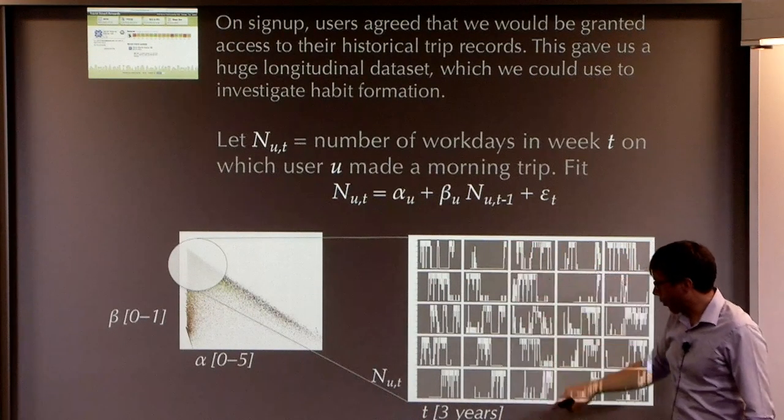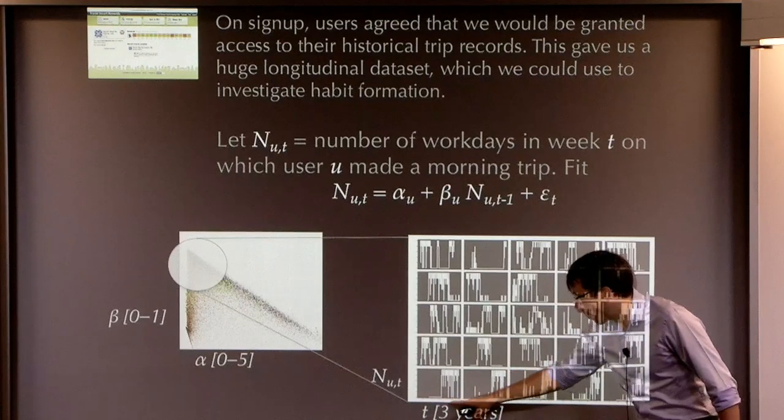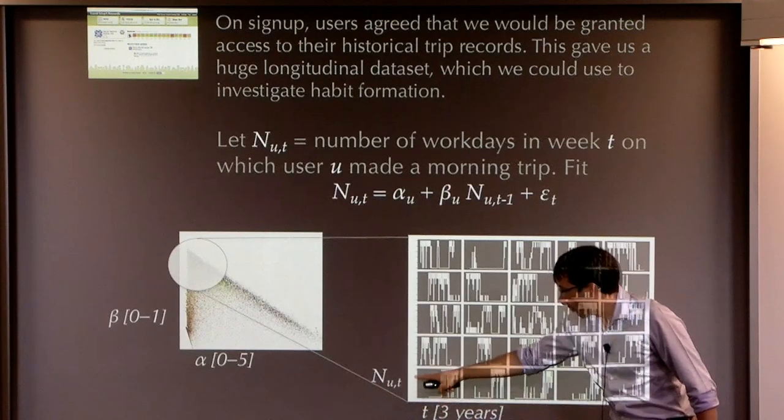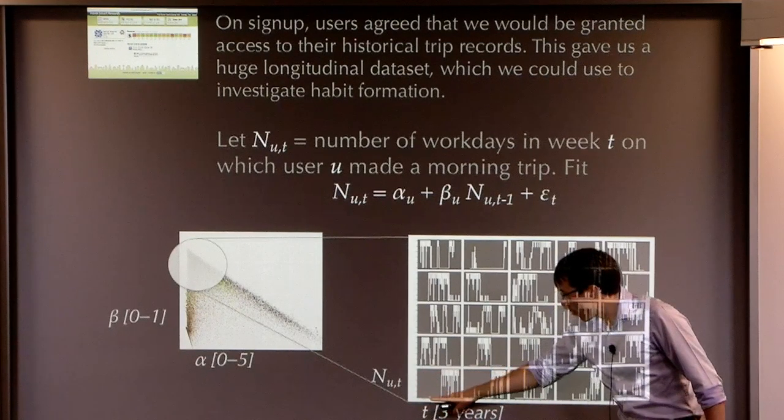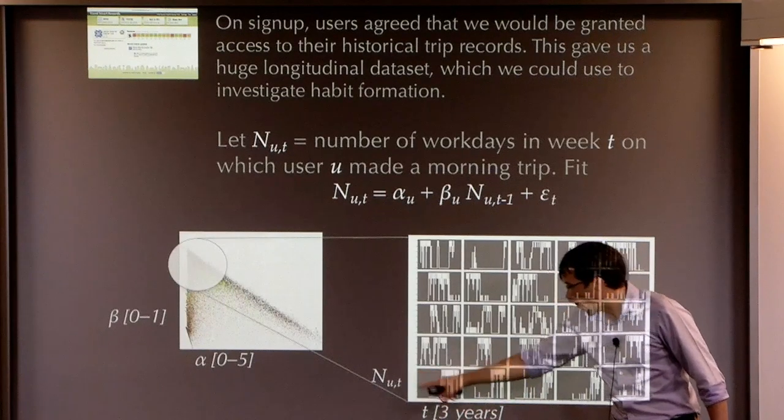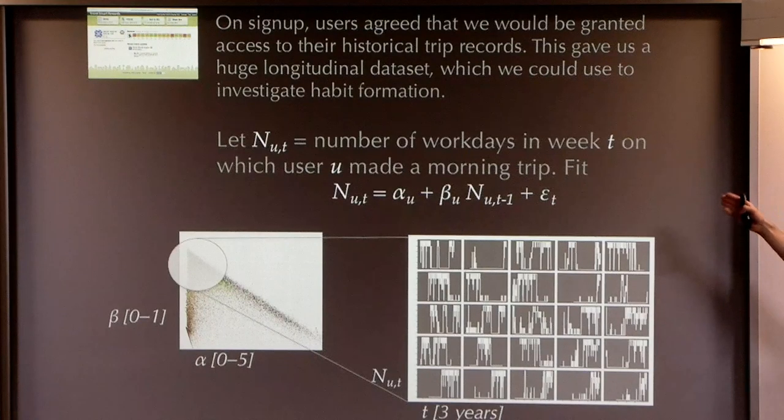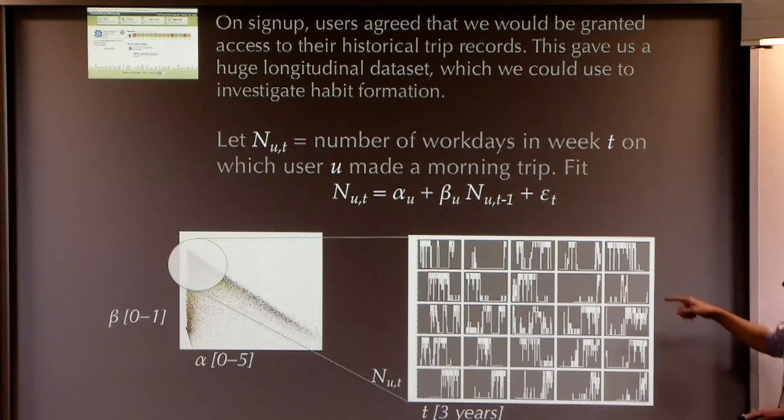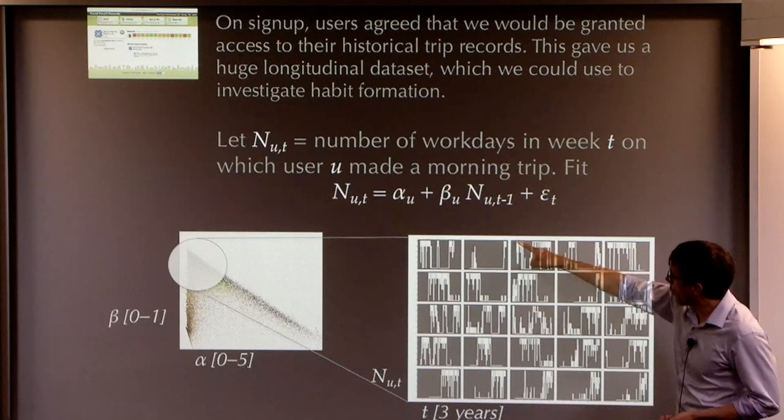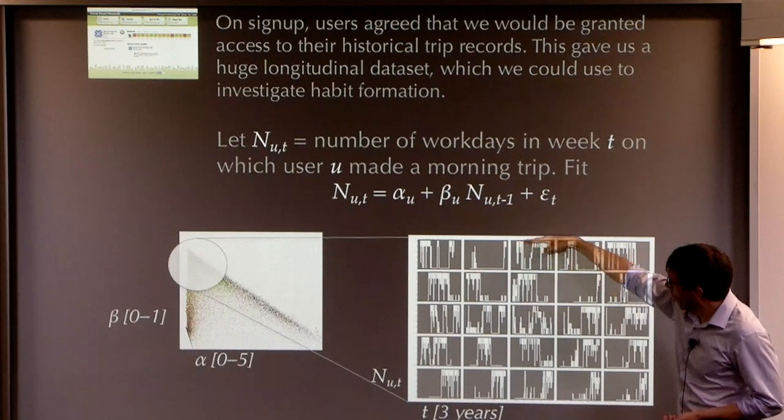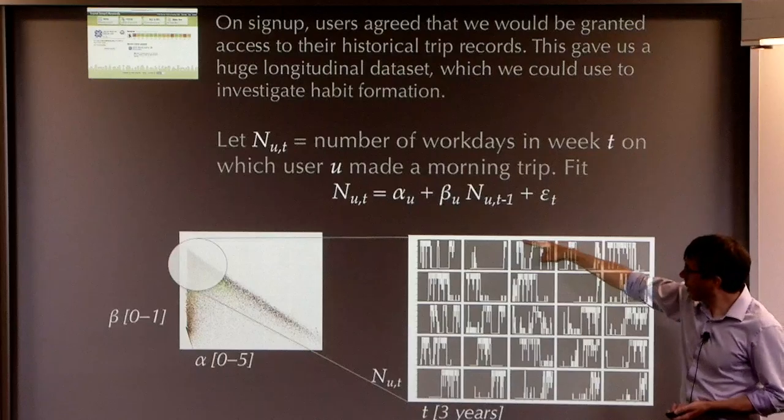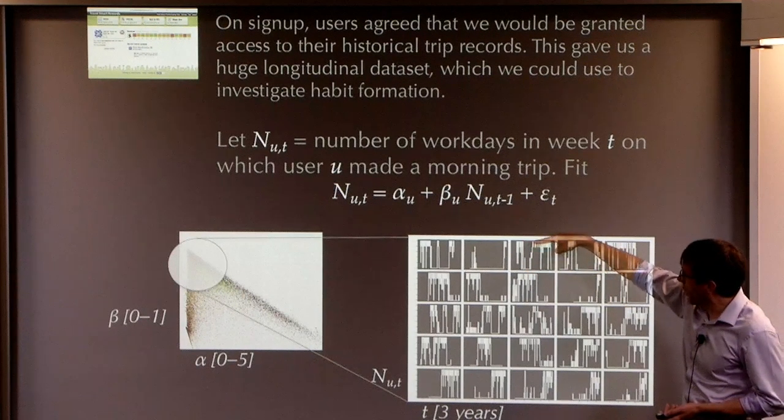I just picked out a group of people with high values of beta and I plotted a sample of them. Each panel here is a different user. The x-axis spans a period of about three years. And the y-axis, each tick on the x-axis is one week. And the y-axis is the number of days each week that they may commute in. There's an awful lot of this sort of behavior. You have a stretch. This is about three months where you're doing four or five trips a week. And then you go off it and then you go on it.